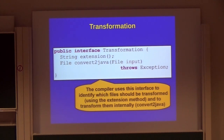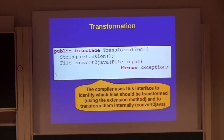Finally, there is a transformation interface that allows the compiler to identify which source code files should be translated using an extension method, and to transform them using a settings method.